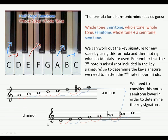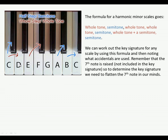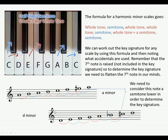Let's try D minor: D to E is a whole tone, E to F is a semitone, F to G is a whole tone, G to A is a whole tone, then a semitone to B flat, then the three semitones to C sharp, then a semitone to D. So D minor has a B flat and a C sharp — but the C sharp is the raised seventh and is not included in the key signature. So D minor's key signature has one flat — B flat — the same key signature as F major.